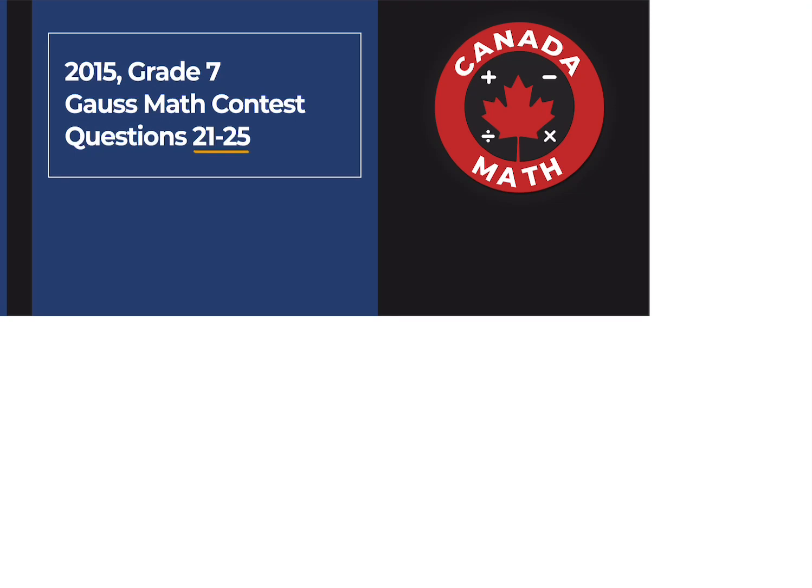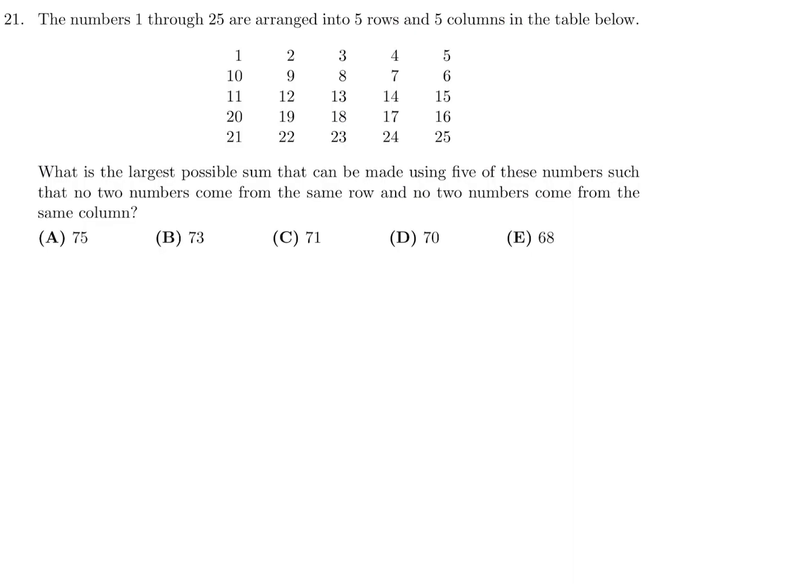Questions 21 through 25 on the 2015 grade 7 Gauss Math Contest. The numbers 1 through 25 are arranged into five rows and five columns in the table below. What is the largest possible sum that can be made using five of these numbers such that no two numbers come from the same row and no two numbers come from the same column.